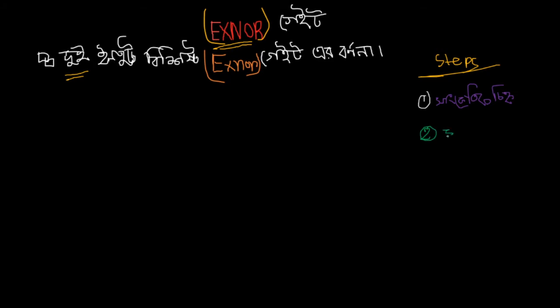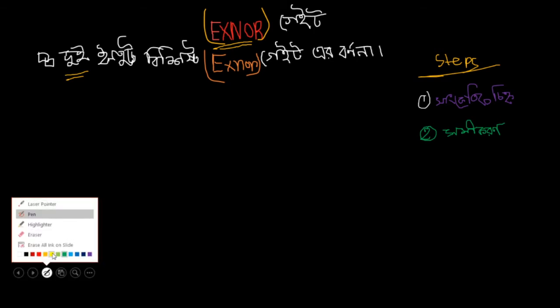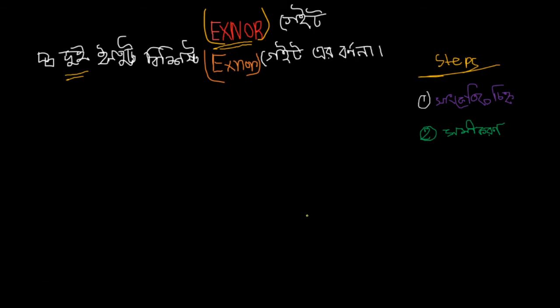Step number one is to show the gate diagram and how it works. Step two shows the gate's symbol. Step three shows how the gate operates. Step four shows the truth table.